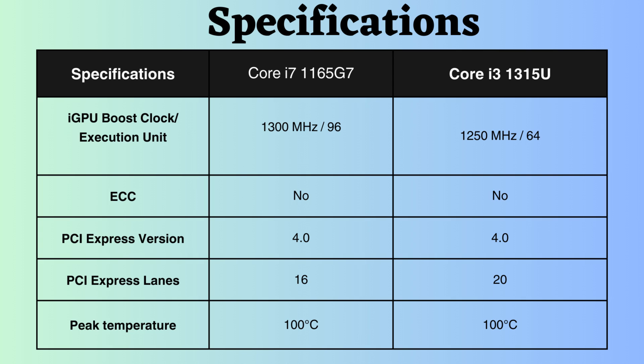Both processors lack support for ECC, making them potentially unsuitable for critical systems such as workstations and servers. While both support PCI version 4, the Core i3-1315U provides 20 PCIe lanes, whereas the Core i7-1165G7 supports 16. Having more lanes can be advantageous for connecting additional devices and achieving faster data transfer rates.